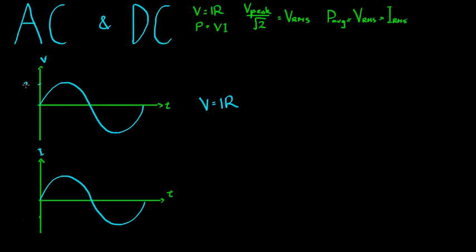It has a peak value of 340 volts and a minimum value of negative 340 volts, ignoring the current for now. So V peak here is equal to the height of that peak there, 340 volts.